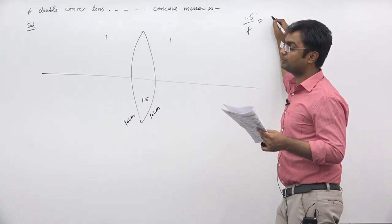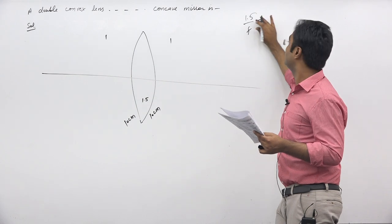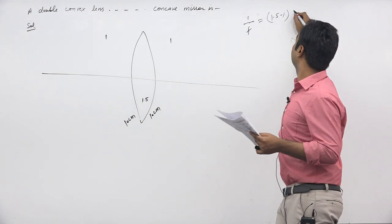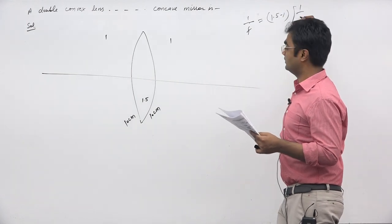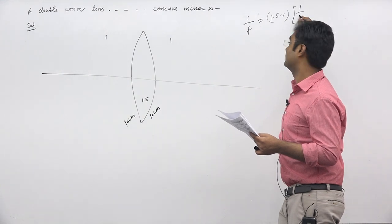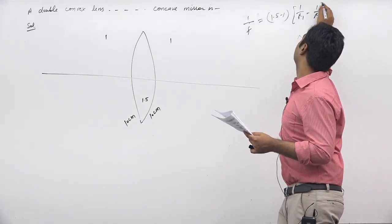n2 upon f is equal to n1 upon f. 1 upon f is equal to n2 minus n1.